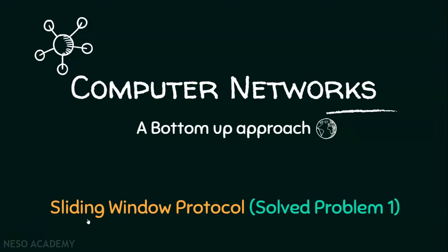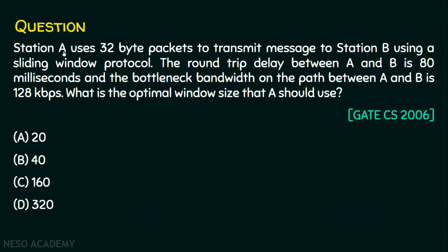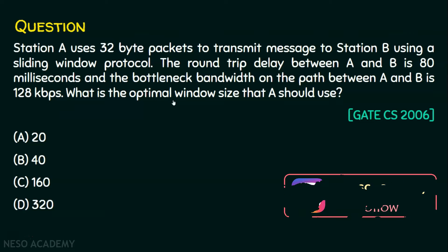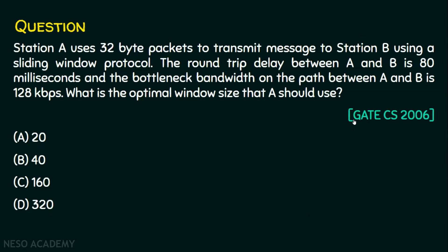In today's lecture, let's solve a problem in sliding window protocol. Station A uses 32-byte packets to transmit messages to station B using a sliding window protocol. The round-trip delay between A and B is 80 milliseconds, and the bottleneck bandwidth on the path between A and B is 128 kilobits per second. What is the optimal window size that A should use? This question was asked in GATE Computer Science in the year 2006.